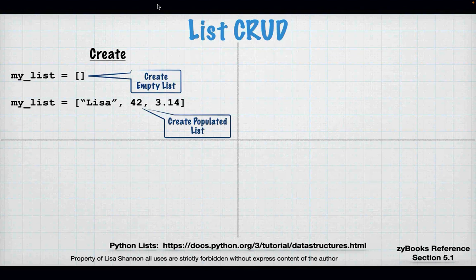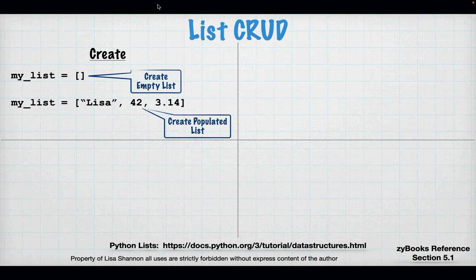You can also create a populated list — same variable on the left-hand side, and on the right-hand side you have an open square bracket with values like 'Lisa', 42, and 3.14, then a closed square bracket. Lists can have any type in them: strings, integers, floats, or even dictionaries.